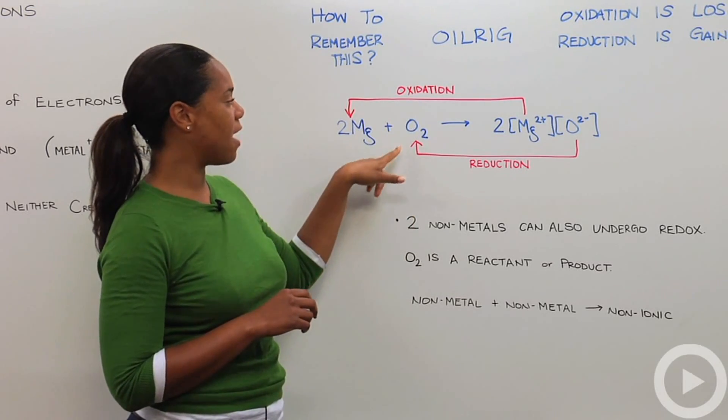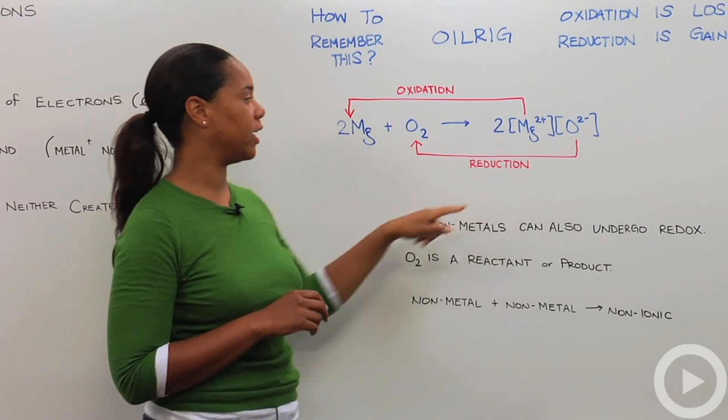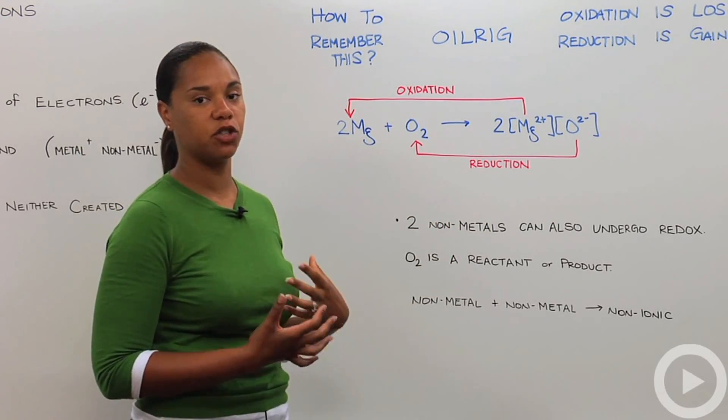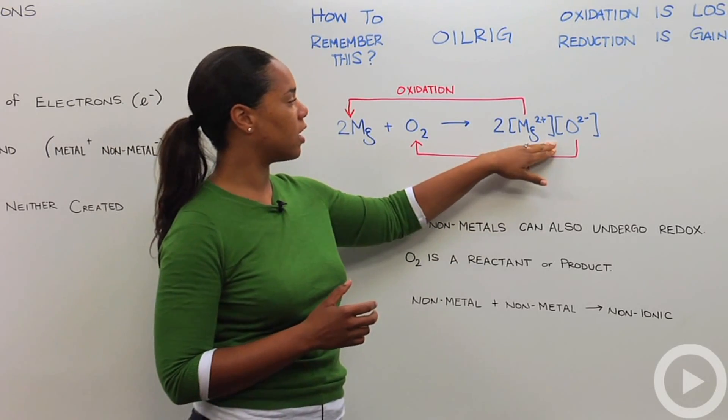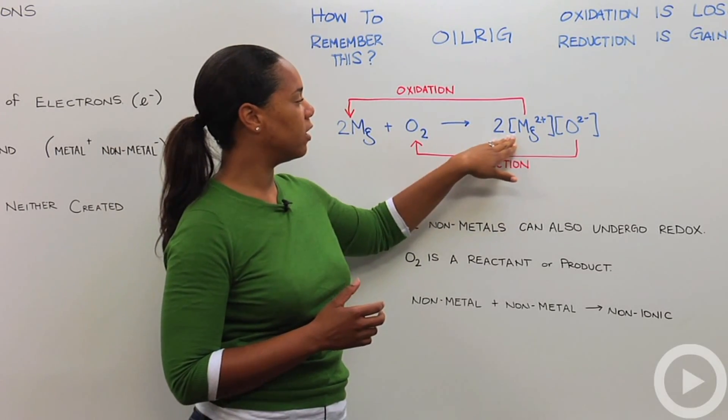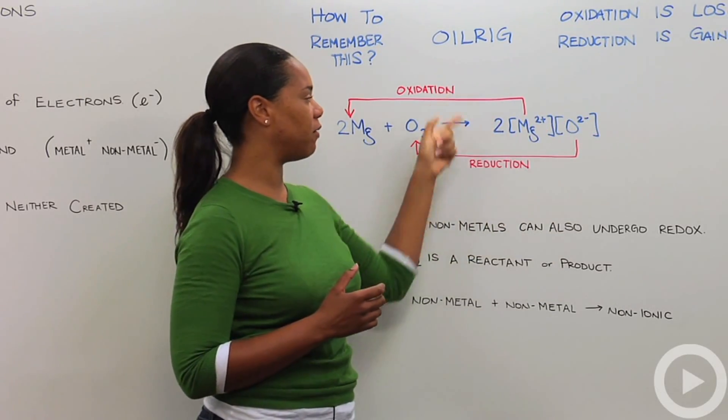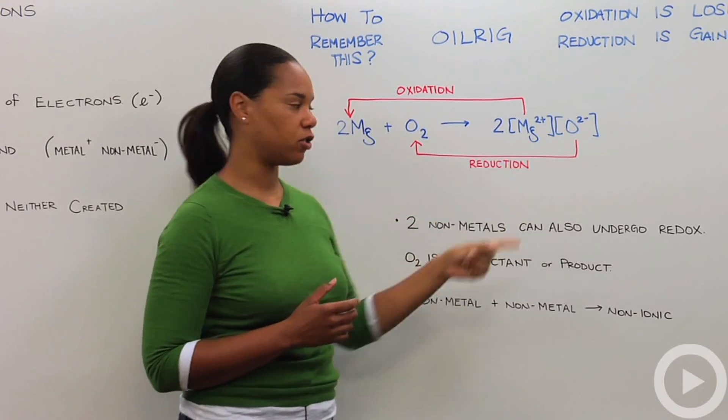On the converse of that, oxygen gained a two minus charge. So that means that it actually gained two electrons, it gained a negative charge. So that means that oxygen was reduced. Here, these brackets are just so I can show the charge on each of the respective elements after they've undergone oxidation and reduction. It is not a sign of concentration.